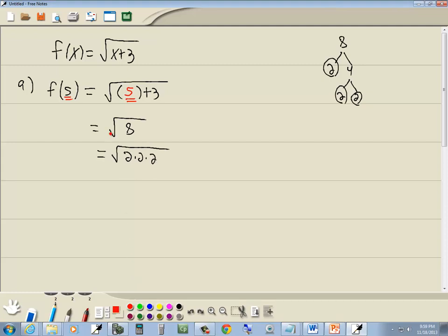Now this is a square root so we're looking for a pair of somethings. Well here's a pair of 2's so the pair of 2's is going to come out in front as a single 2. So we get 2 square root of 2 for our answer for part a.